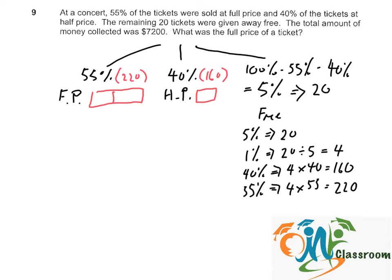So, the cost of 55%, which is 220 tickets at full price, we can see as 220 times 2 units, that would be 440 units, and for the 40% of the tickets at half price, we can see as 160 times 1 unit.